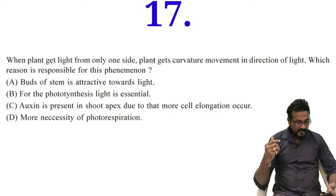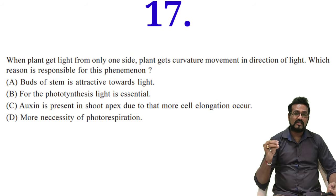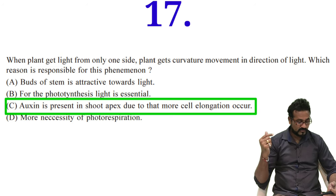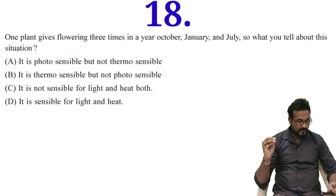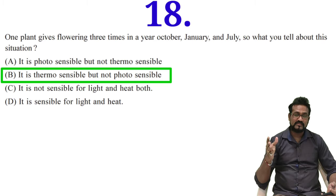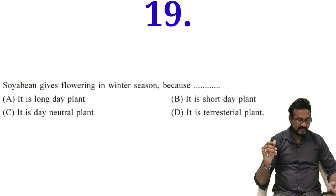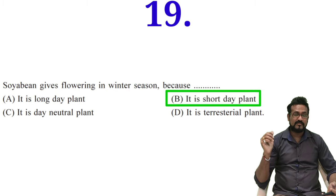When plant gets light from only one side, plant gets curvature, movement, direction. It is related with plant movement. Light is not responsible for only photosynthesis or flowering, it is also responsible for plant movement. Auxin is present, that's why it shows movement. So one plant gives flowering three times. In that situation, what can you say? It is not light dependent. Obviously the option will be it is thermosensitive but not photosensitive. Evening flowering in winter season - winter season generally day duration is small. That's why option B will be the answer - short day plant, SDP we generally call as. Evening is very famous example of SDP.